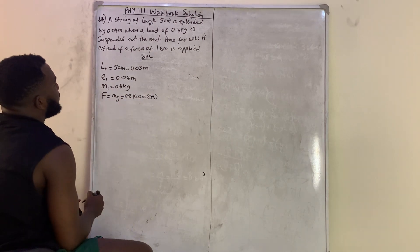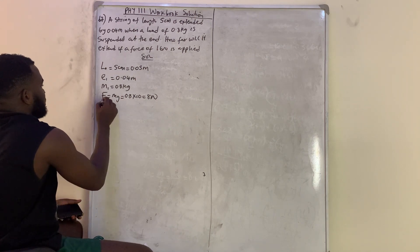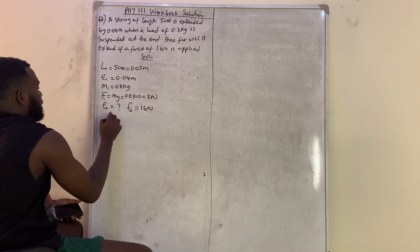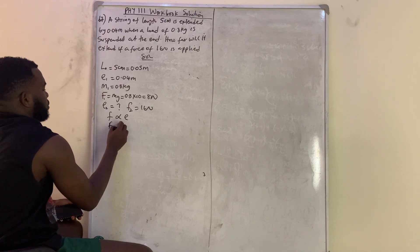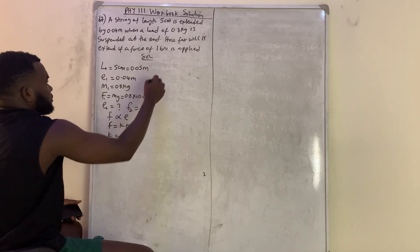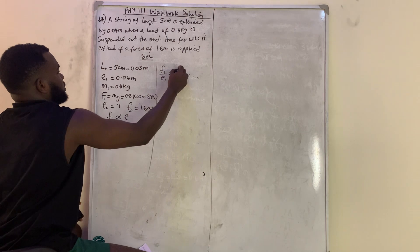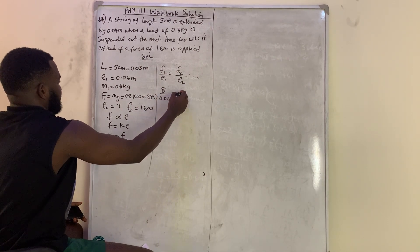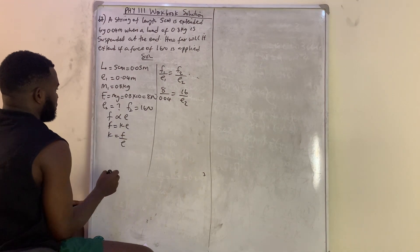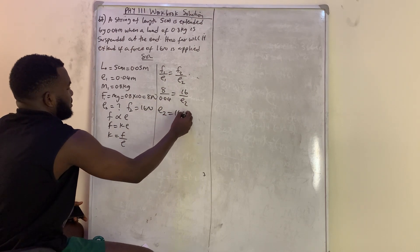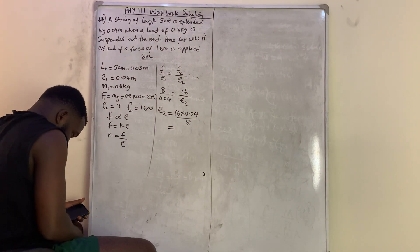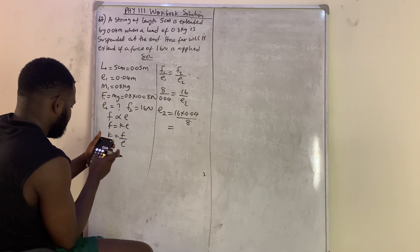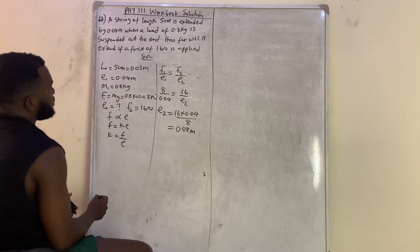Using Hooke's Law, F is proportional to extension e, so F1/e1 = F2/e2. Substituting: 8/0.04 = 16/e2. Cross-multiplying: e2 = (16 × 0.04) ÷ 8 = 0.04 × 2 = 0.08 meters. So the new extension is 0.08 meters.